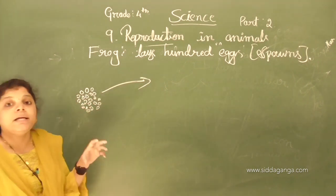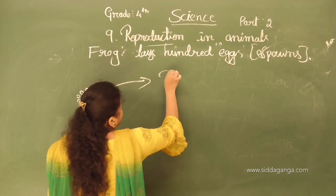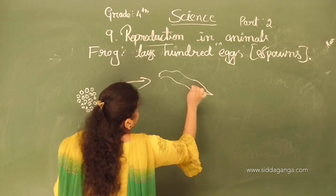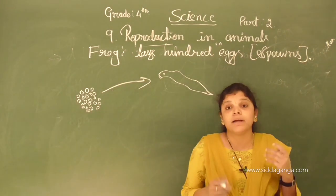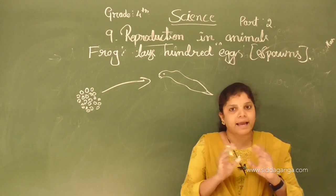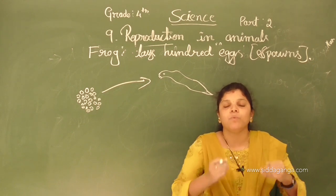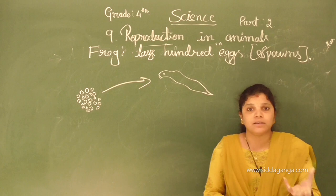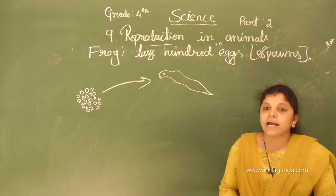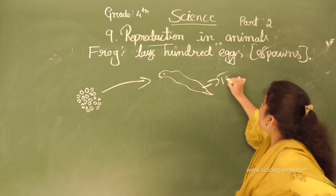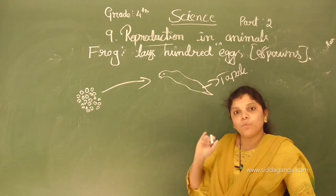The eggs change into a tadpole. A tadpole looks like a fish. They have no fins, no legs — they just swim in water. This tadpole has no legs and no lungs. They live in water only.